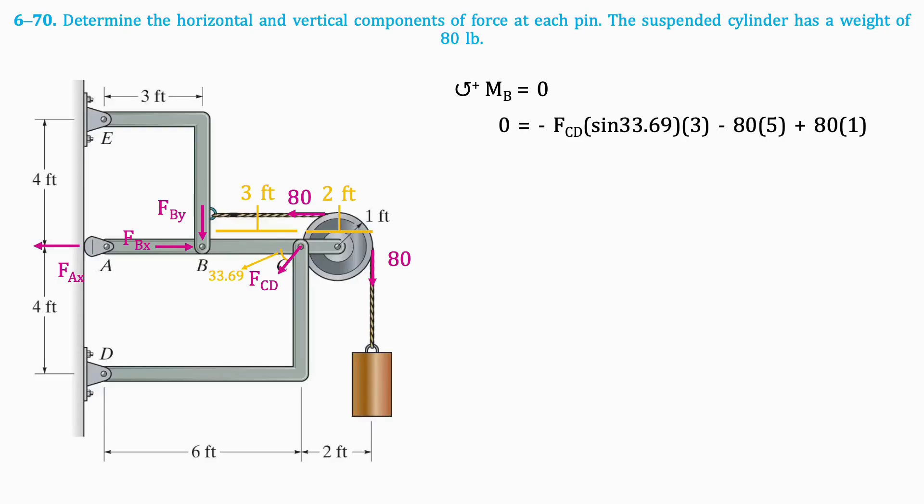Similarly, F_AX and the reactions at B will not generate a moment about point B. We get the following equation, which when simplified, gives that F_CD equals negative 192 pounds.